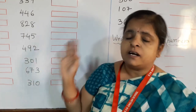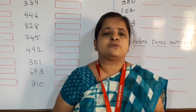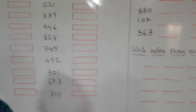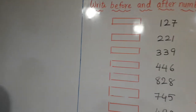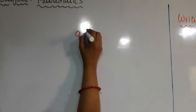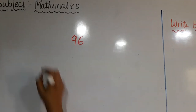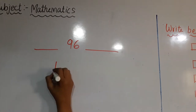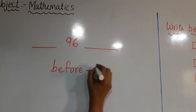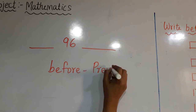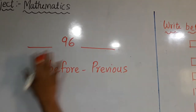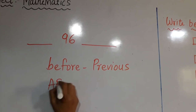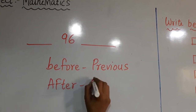You have learnt this in first, second, and third standard also, but we are going to understand it better. For example, if the number is 96, what will be the before and after numbers? Before number means previous number, and after number means next number.